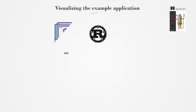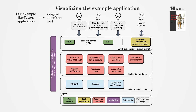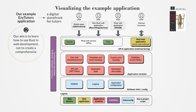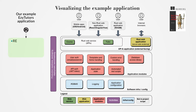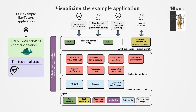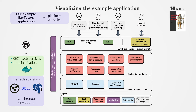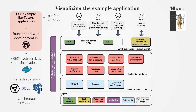We'll use Rust to build web servers and applications, focusing on a specific example, EasyTutors, a digital storefront for tutors. Our aim is to learn how to use Rust in web development, not to create a comprehensive application. We'll explore REST web services and containerization using Docker. The technical stack includes Actix Web, SQLX, and Postgres, emphasizing asynchronous operations. The application will be platform-agnostic, suitable for various deployment environments. We'll cover foundational web development in Rust, focusing on practical application and development practices, while minimizing reliance on external crates to enhance learning.